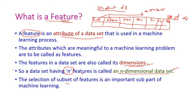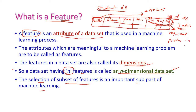The selection of a subset of features is an important sub-part of machine learning. For example, if I want only the subjects along with student number, instead of 10, I require only 7 attributes. This selection of subset — selecting only the required fields or required attributes in your dataset — is called as subset selection.